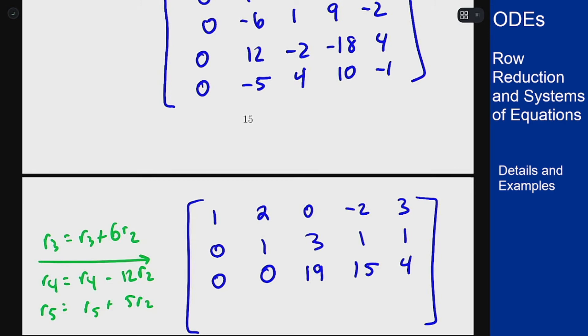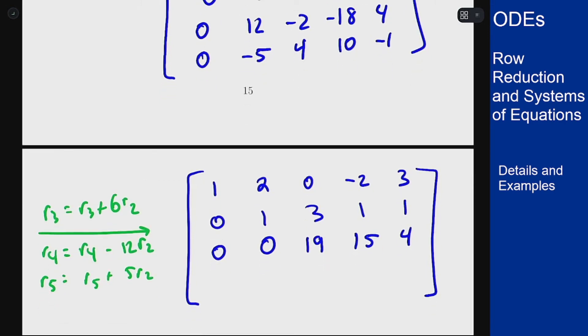Moving down one more row. I'm now subtracting 12 copies of row 2 from row 4. So 0 is 0 as expected. Minus 2 minus 12 times 3 is negative 38.